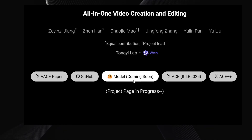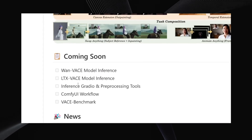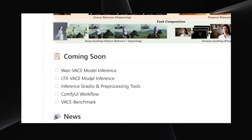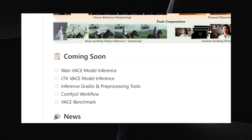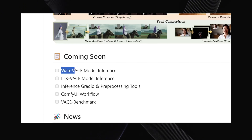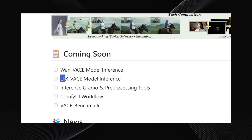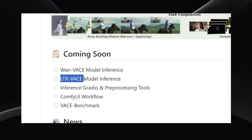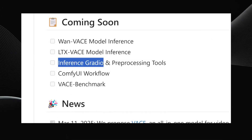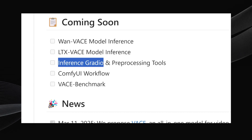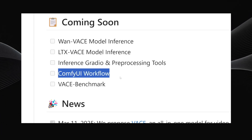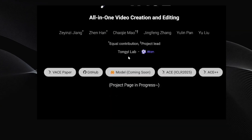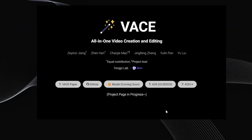It looks like they're planning to open source it. And if you click on their GitHub repo, you'll see that Vase is actually a framework, not a video model itself. This means you can plug in any video generator, including Alibaba's WAN 2.1, which is currently a top-tier open-source video model. You could also use LTX, and I'm sure Hunyuan would work too. Plus, they're going to release a Gradio interface — a user-friendly visual interface — so you don't have to mess with code all the time. And they're even planning a ComfyUI workflow. I'll link to this main page in the description below so you can explore further.